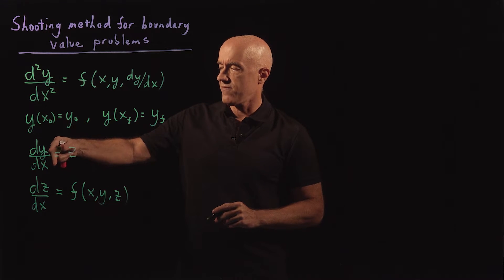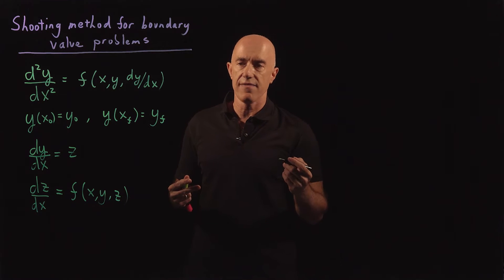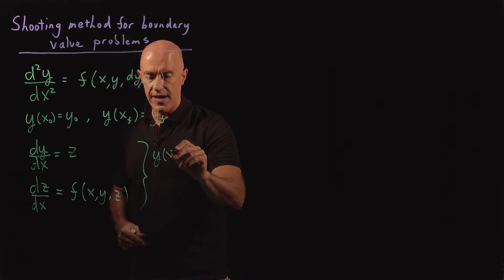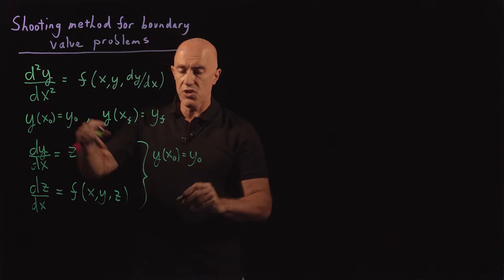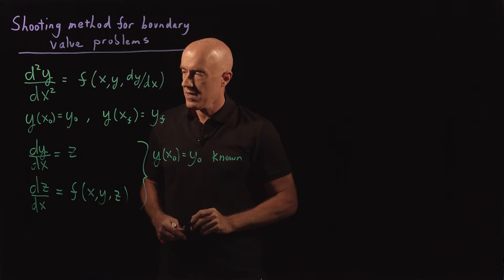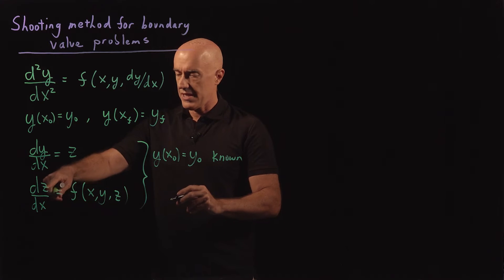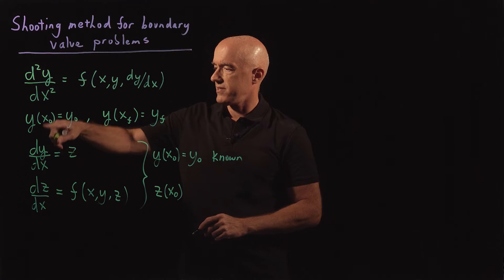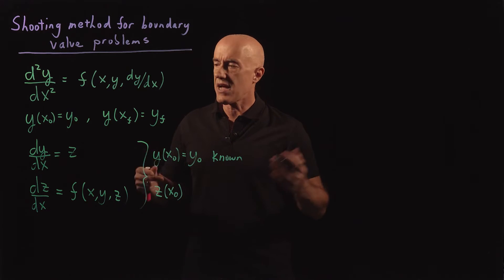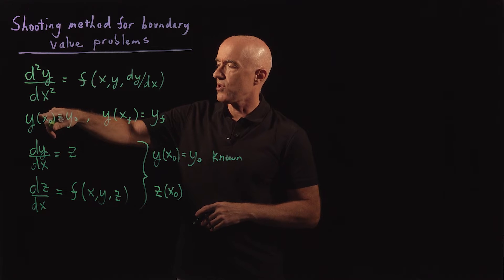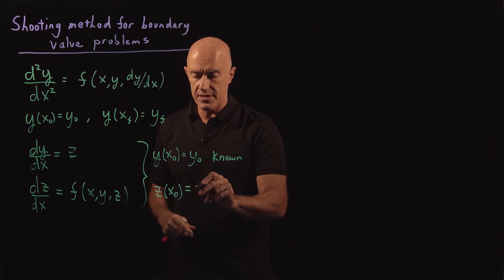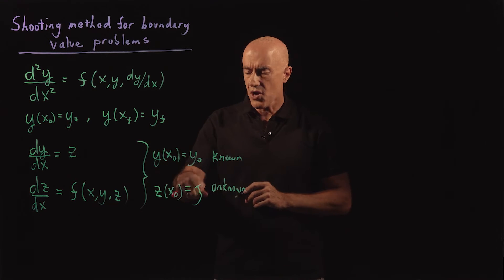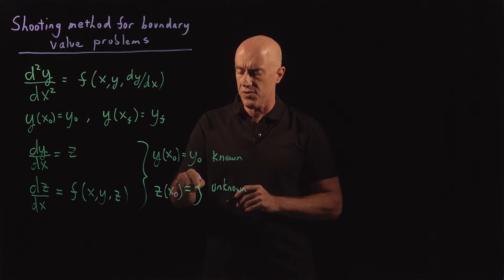If we wanted to solve this system using ODE45, we would need two initial conditions. We have y(x0) = y0 — that's known. But to solve the z equation, we would need z(x0), which is dy/dx at x0. That's not known in the two-point boundary value problem. So we're going to call this ksai, and ksai is unknown. Our goal is to determine the value of ksai.